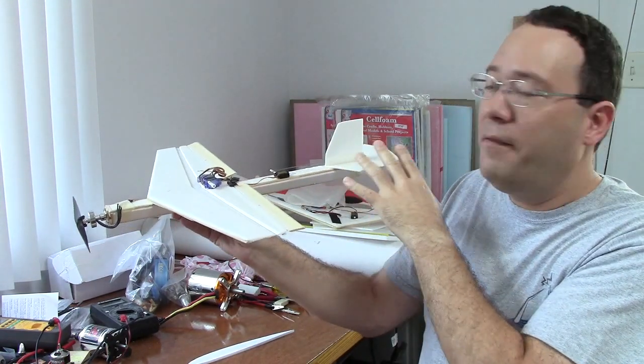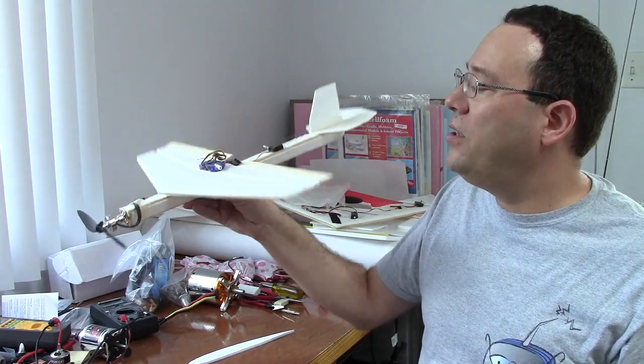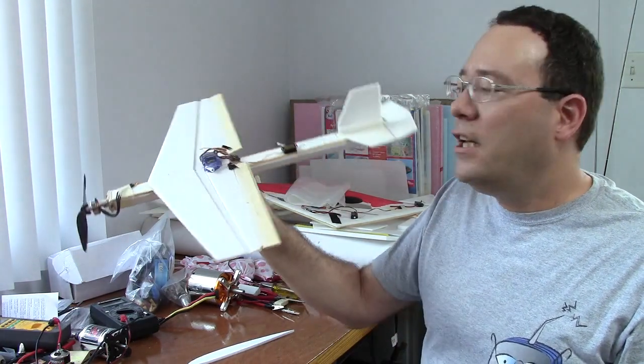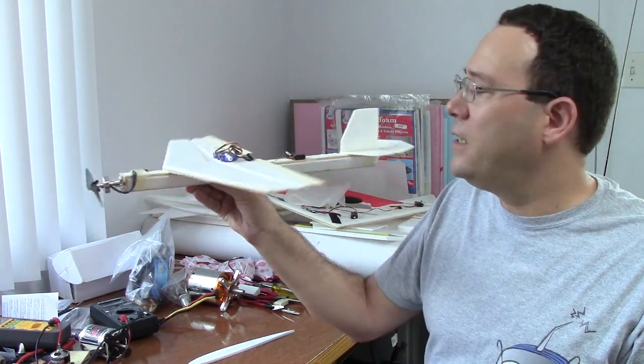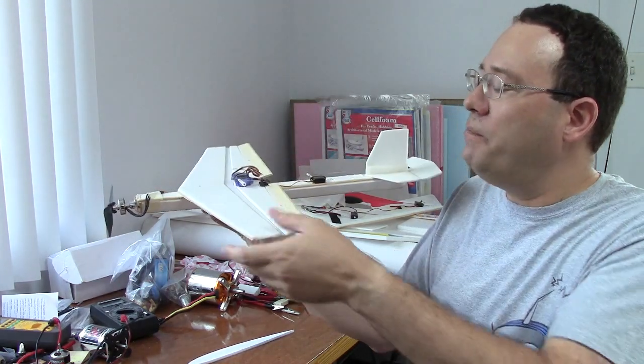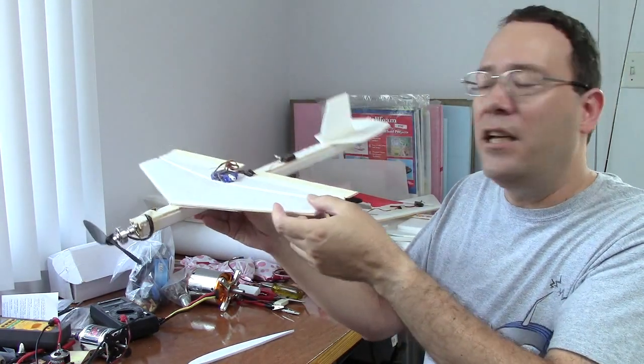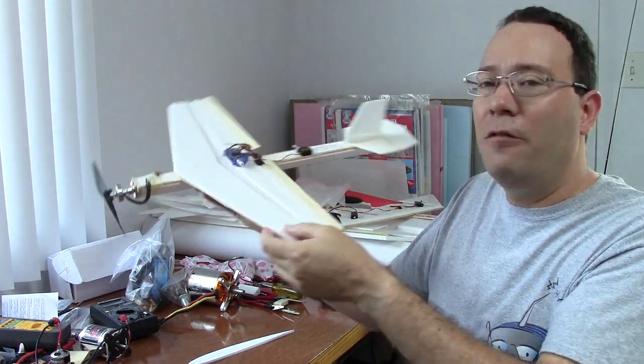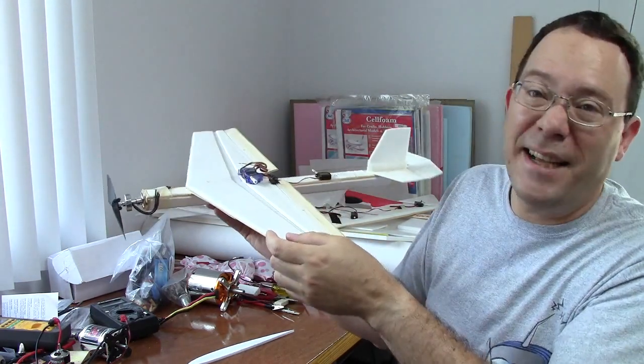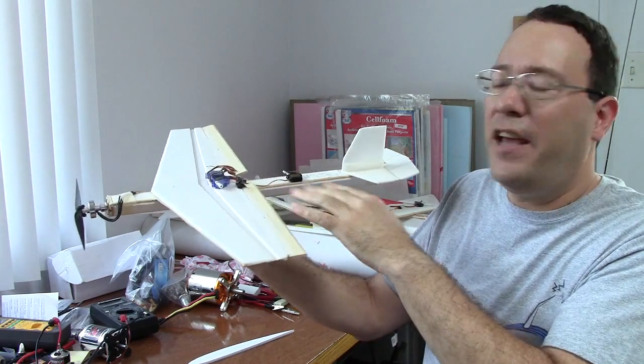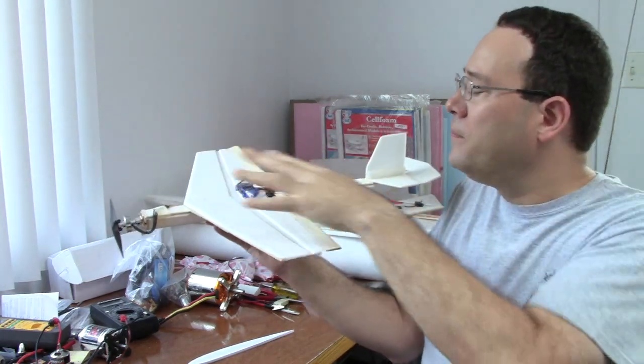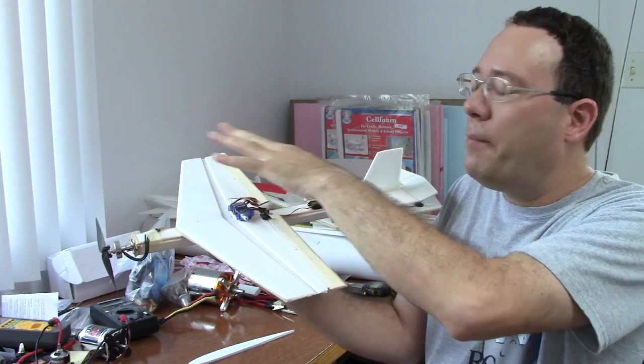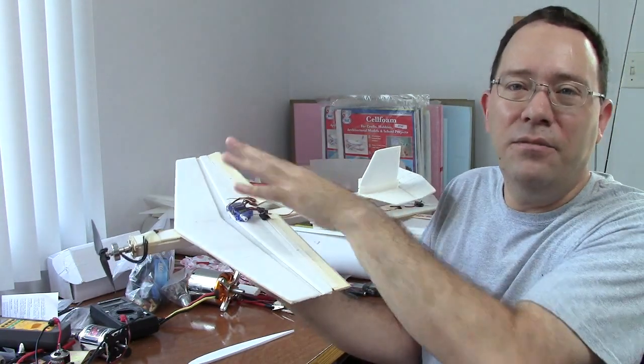But if the vertical stabilizer is not big enough, you can get into this thing that's called Dutch Roll, which I unfortunately I've experienced myself with some of my designs. And it's basically it just doesn't have enough stability, so it kind of keeps overshooting and it's just not good. But the easy fix is to just have a bigger vertical stabilizer. Because the three stability axes are actually tied to each other.